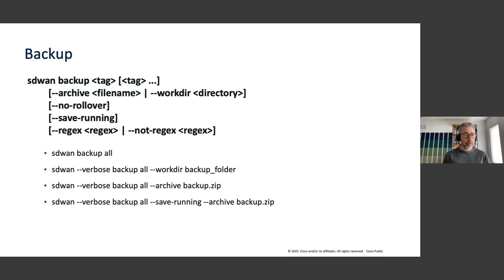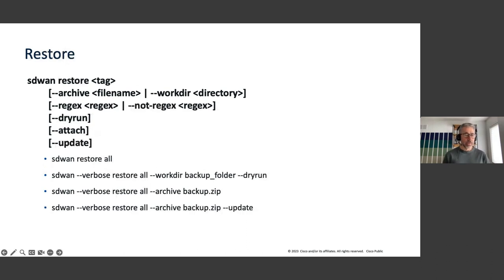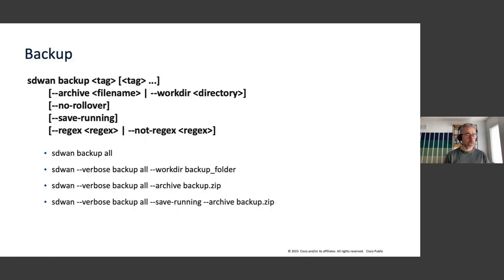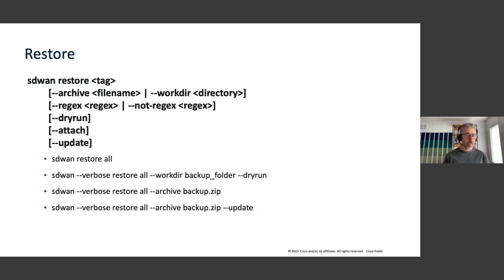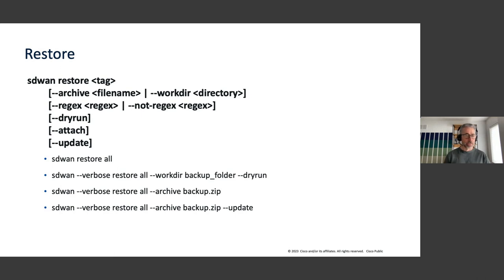Another CLI example is restore. Similar idea — you have the 'sdwan' keyword, you can run 'sdwan restore all' at minimum, and then you can also provide additional options to that restore. We'll touch a lot more on that with demos and examples during Thursday's session.